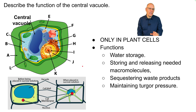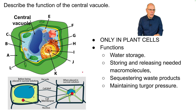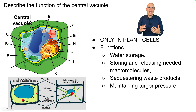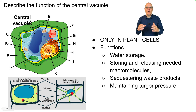We'll talk about turgor pressure in the context of osmosis — the movement of water — but as water flows into a cell, it creates outward pressure that keeps plant cells full, firm, and upright, preventing wilting.